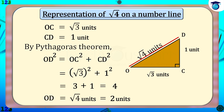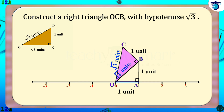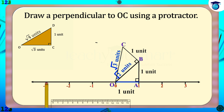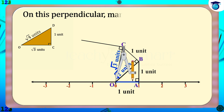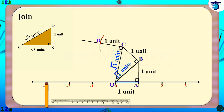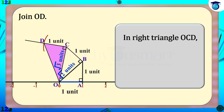To represent root 4 on a number line, the first step is to construct right triangle OCB with hypotenuse root 3, which we have already done. Now at C, draw a perpendicular to OC using a protractor. On this perpendicular, mark a point D so that CD equals 1 unit. Join OD to get right triangle OCD with base OC equals root 3 units, altitude CD equals 1 unit, and hypotenuse OD equals root 4 units.